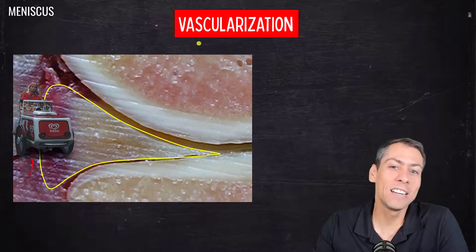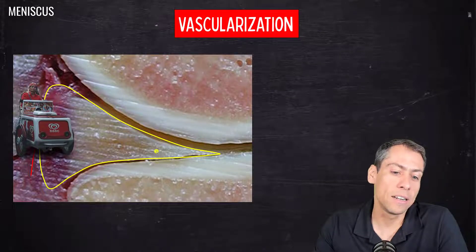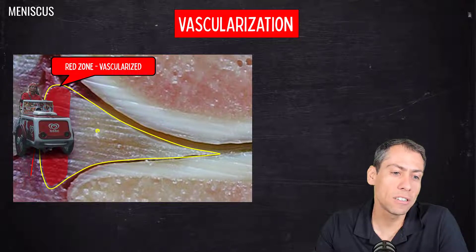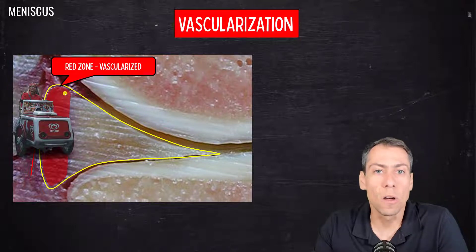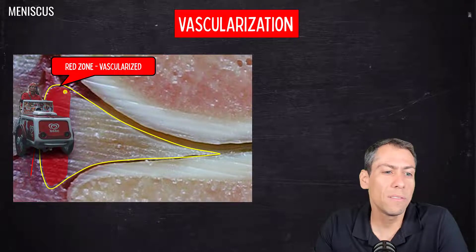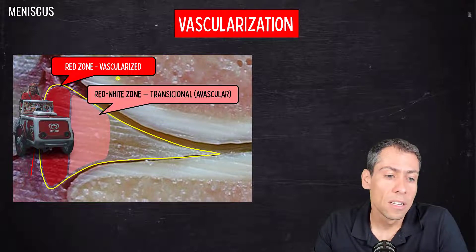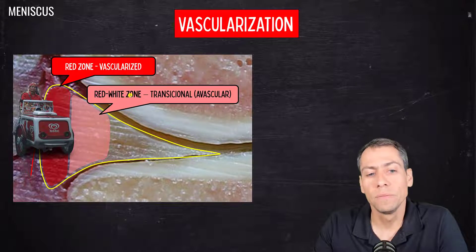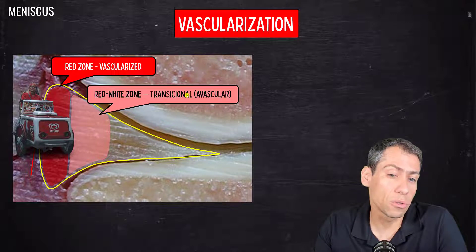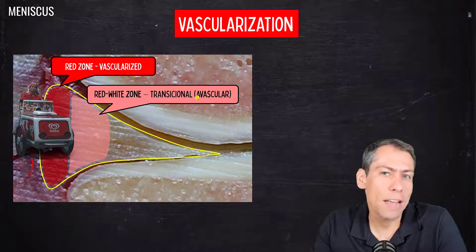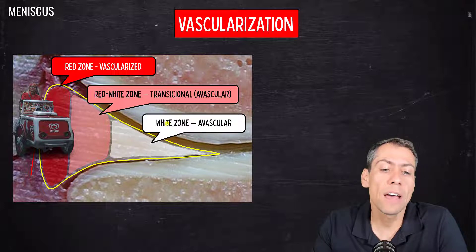Here we have an image of a meniscus in short axis, and we have three vascular zones. The red zone is the peripheral one, which is vascularized. We have the red-white zone, or transitional zone, which is mainly avascular. And we have the white zone, which is totally avascular.